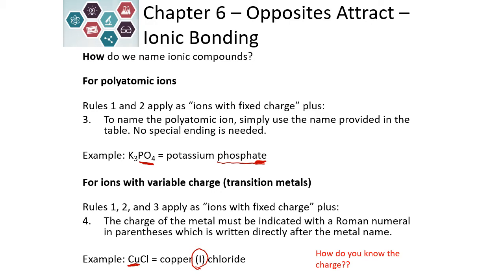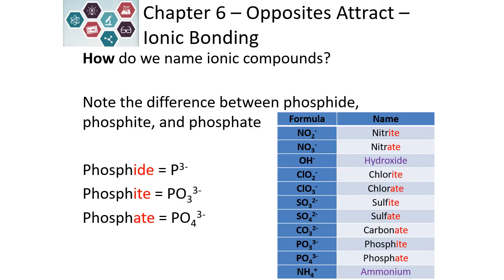How do we know what the charge is? We look at the nonmetal it's attached to. Because there's only one chlorine, which has a negative one charge, that means our copper can only have a positive one charge because the charges need to balance. We do name our polyatomic ions differently than we do just the element by itself. If it is the element by itself, the ending is -ide. If it's a polyatomic ion, the ending is either -ate or -ite.